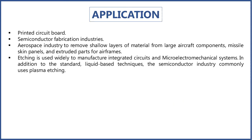Applications of chemical machining include: manufacture of printed circuit boards (PCBs), semiconductor fabrication, and the aerospace industry — which uses it to remove shallow layers of metal from large aircraft components, missile skin panels, and extruded parts of airframes. Etching is also widely used to manufacture integrated circuits and micro-electromechanical systems (MEMS). The semiconductor industry commonly uses plasma etching in addition to standard liquid-based techniques.